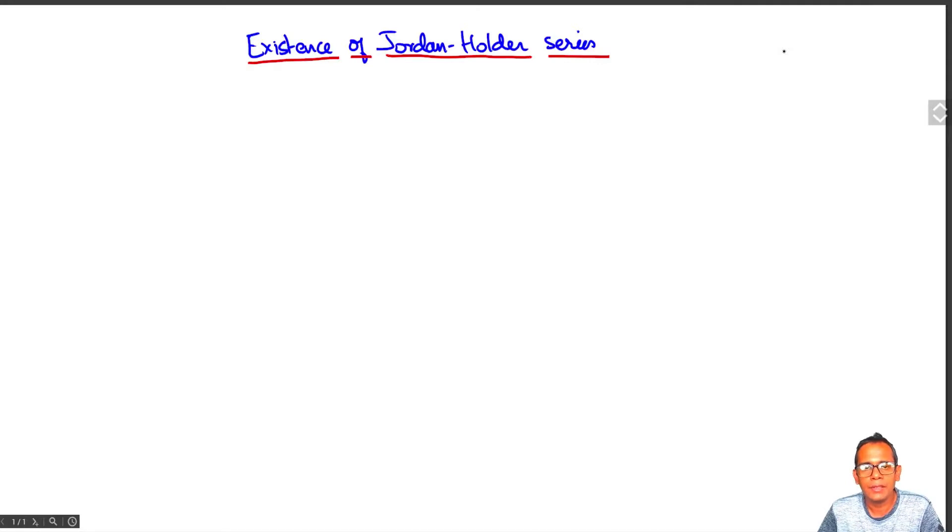I will now show that if an R-module M satisfies the ascending chain condition and the descending chain condition, then it admits a Jordan-Hölder series.